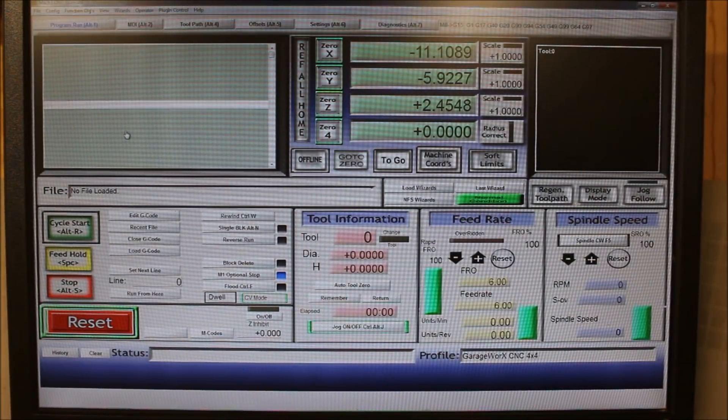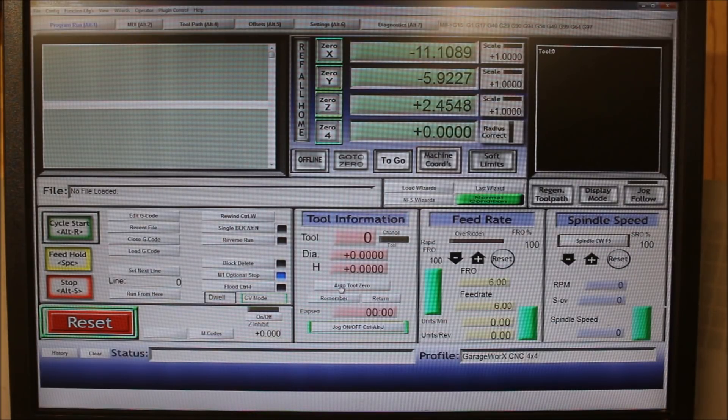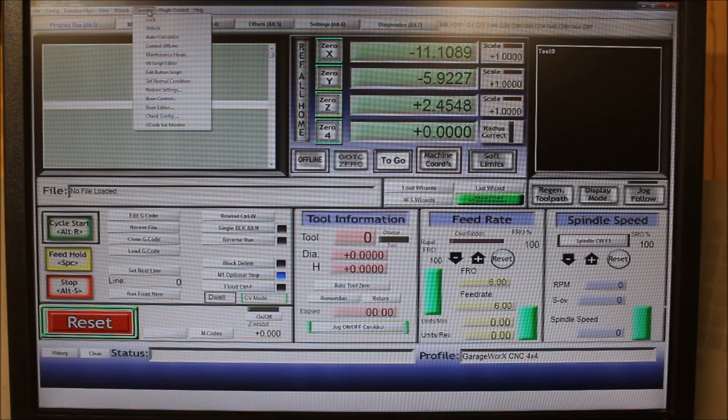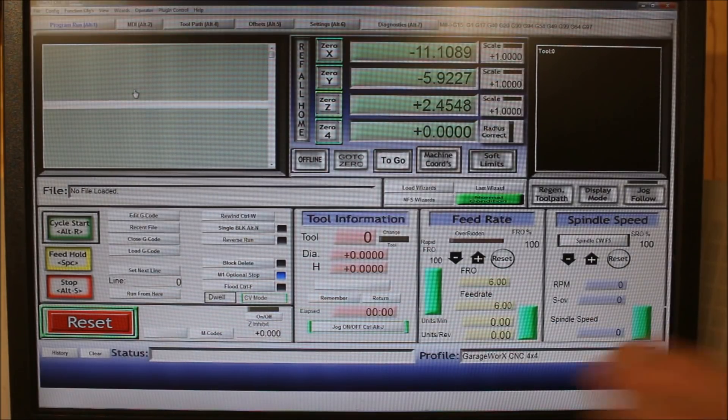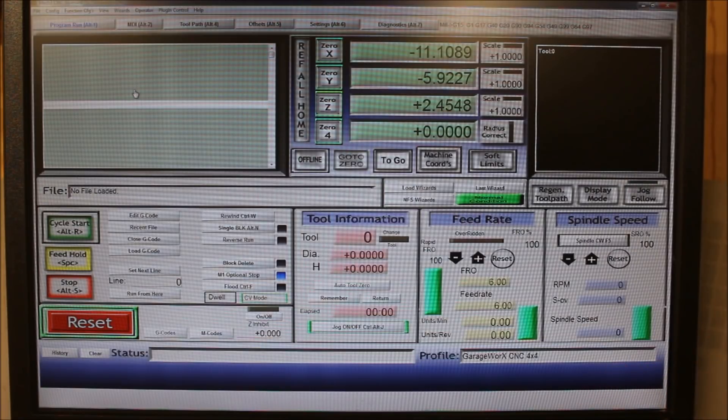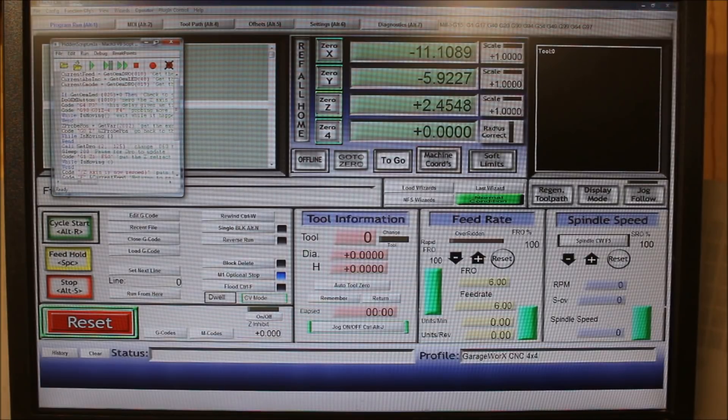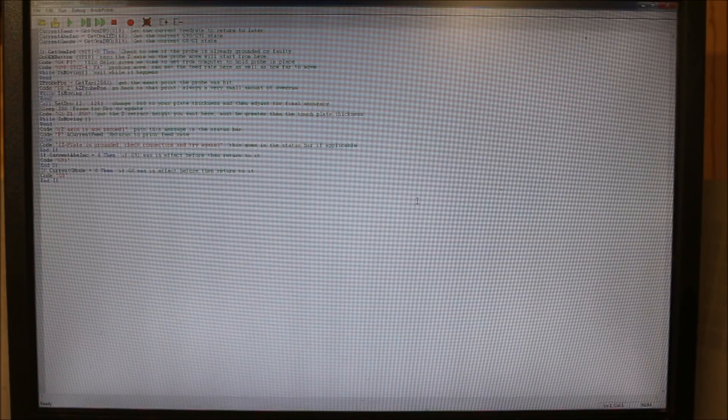Okay, one other thing you're going to need to do to get the touch plate to work properly is you have to add a script to the auto tool zero. And to do that you come over here on your main program run page in Mach 3, you hit operator and then come down and hit edit button script. And all the buttons that are allowed to be edited are flashing, so then you just click on the auto tool zero.